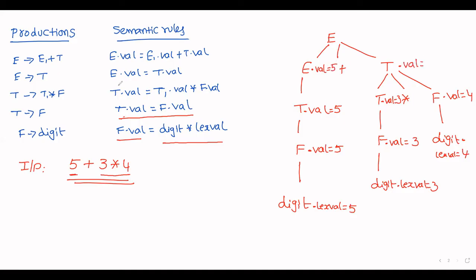E.value = 5. T.value for the multiplication node equals T.value * F.value = 3 * 4 = 12. Then E.value = E.value + T.value = 5 + 12 = 17. The parse tree has now been converted into an annotated parse tree.